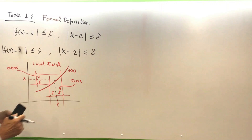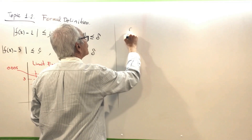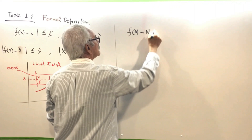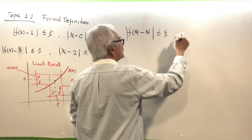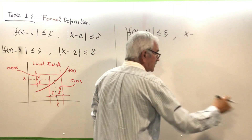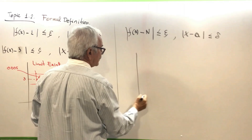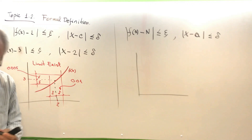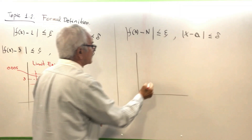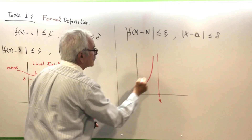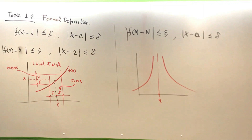Let's consider f(x) minus some unknown limit L less than or equal to epsilon, while x minus the value we are approaching is less than or equal to delta. Suppose we have a rational function — it's the easiest example to demonstrate that the limit does not exist. We have an asymptote at some point a, giving a function like this.